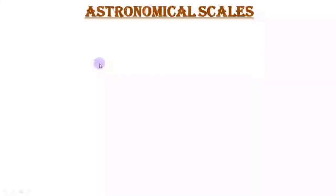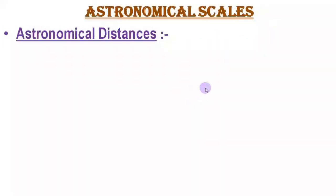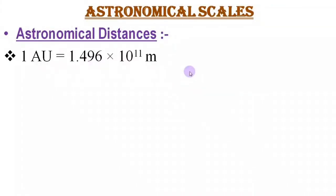In today's topic, we deal with the basic property of Astrophysics — that means to analyze the stellar universe, we have some tools to measure them, which is Astronomical Scales. First, we have to measure the distance between the stellar objects. This is a huge task. Some units we have; one by one we recognize them. First is Astronomical Unit.